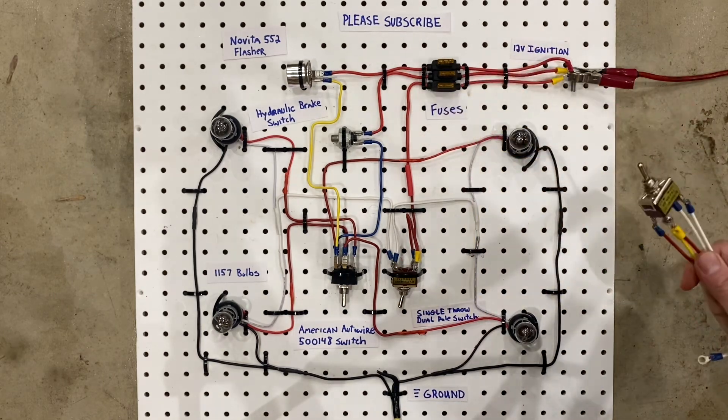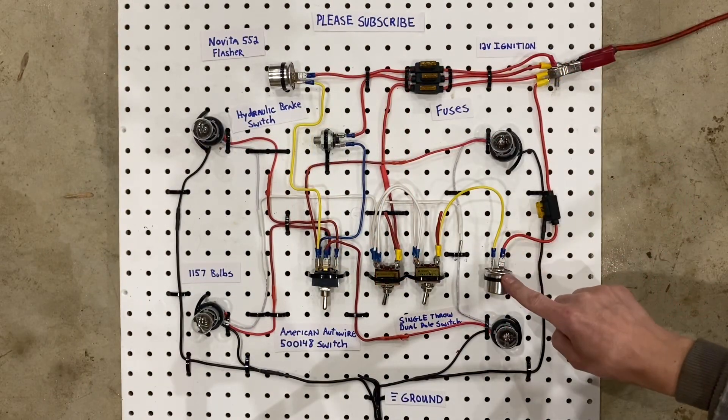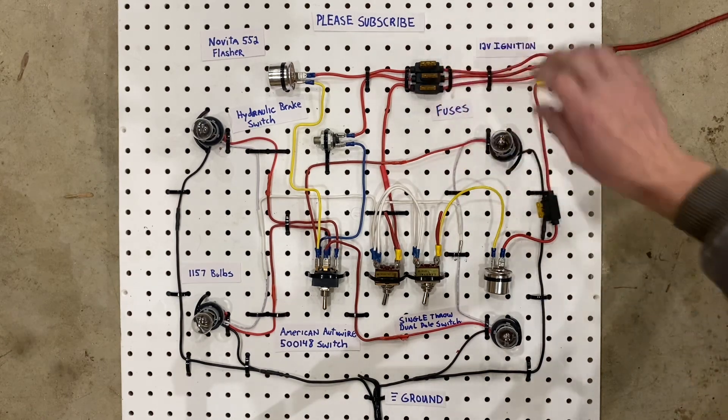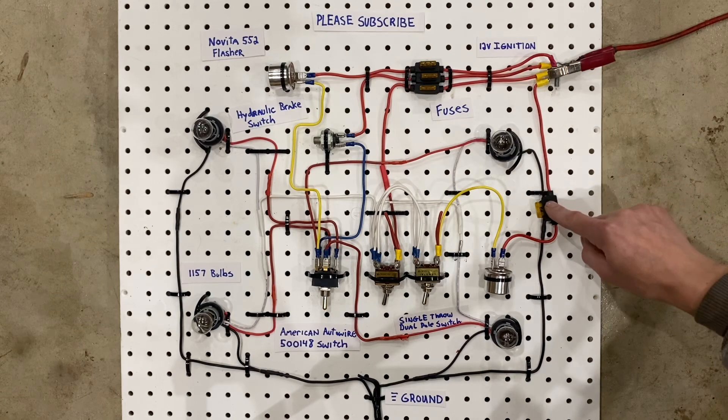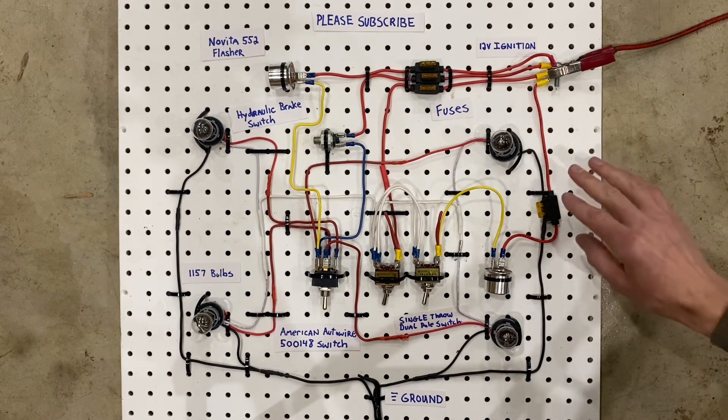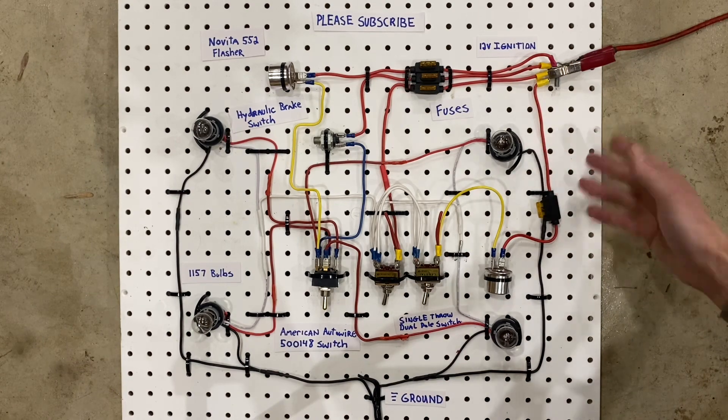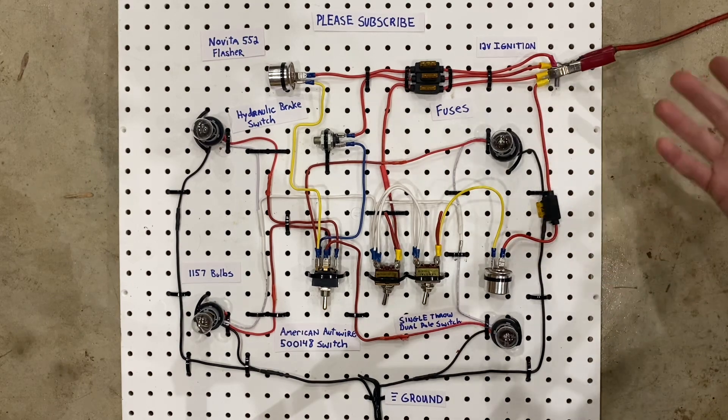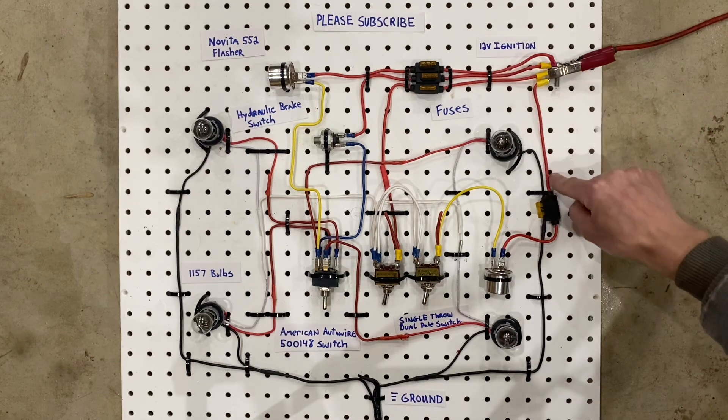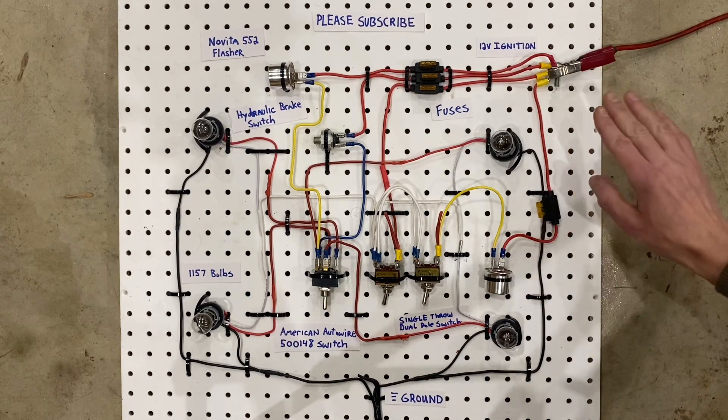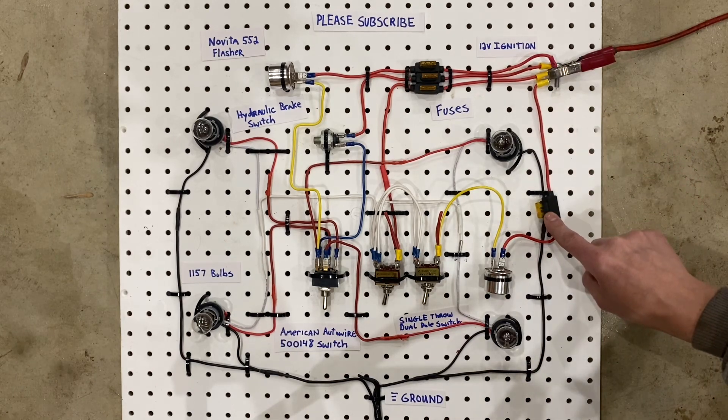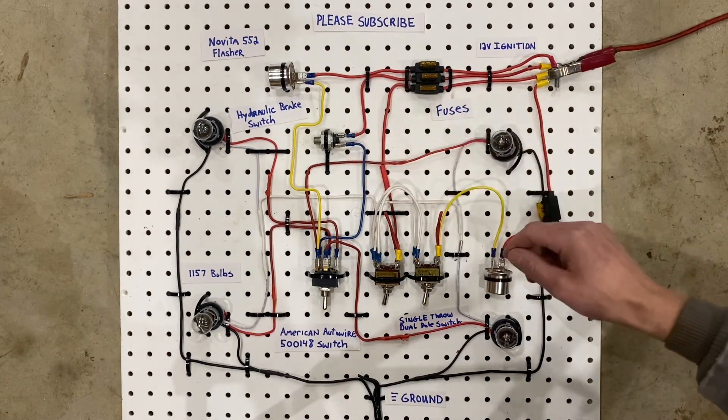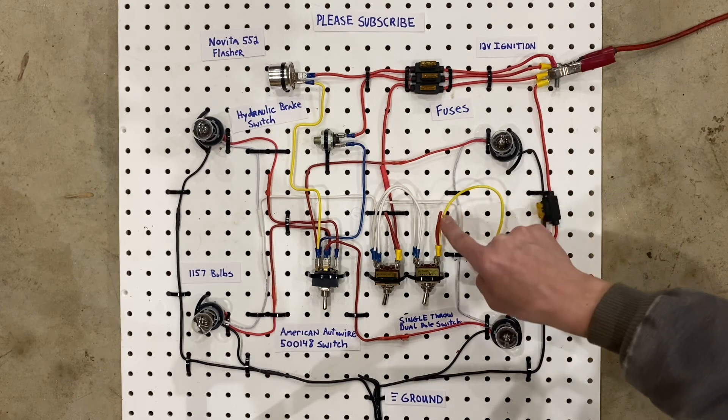Now right here, you have your power feed for your hazard lights. This is going to be a separate power source than these three, because these three will turn on and off with your ignition switch. This one, you want powered all the time, no matter what. You don't want it connected to your ignition, because when you're using your hazard lights, you generally have the engine off, the ignition off. You just want your lights to be flashing because you're on the side of the road. So this wire will actually go straight to a battery source that is powered all the time. It comes through here, goes through a fuse, and it comes to your flasher. And your flasher is the same exact one as there. It's the 552.